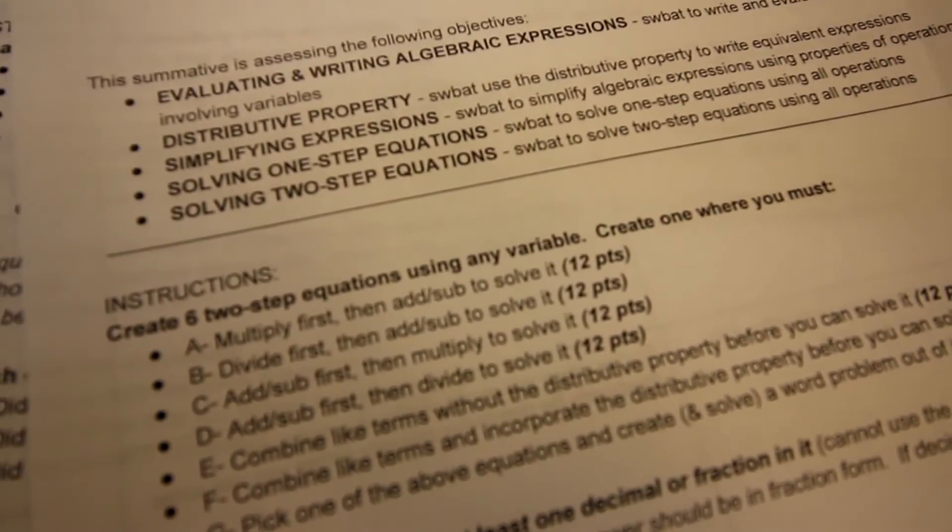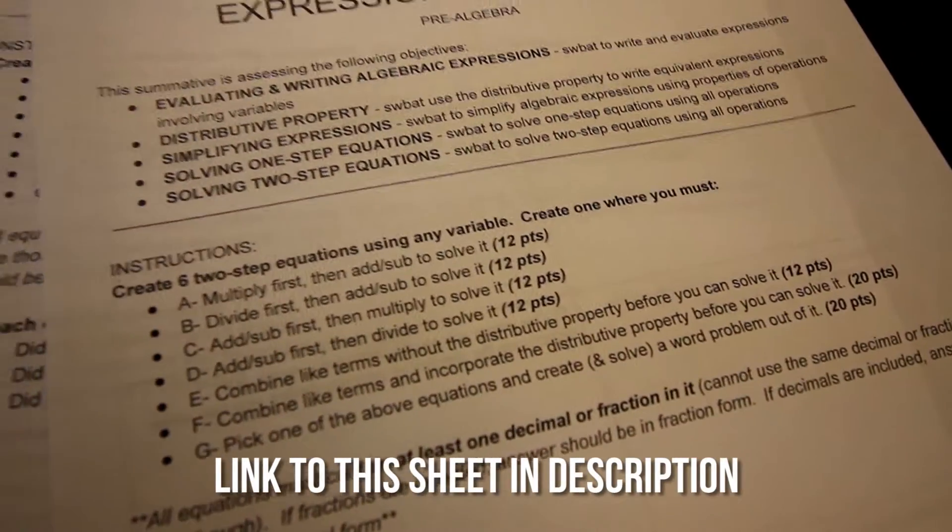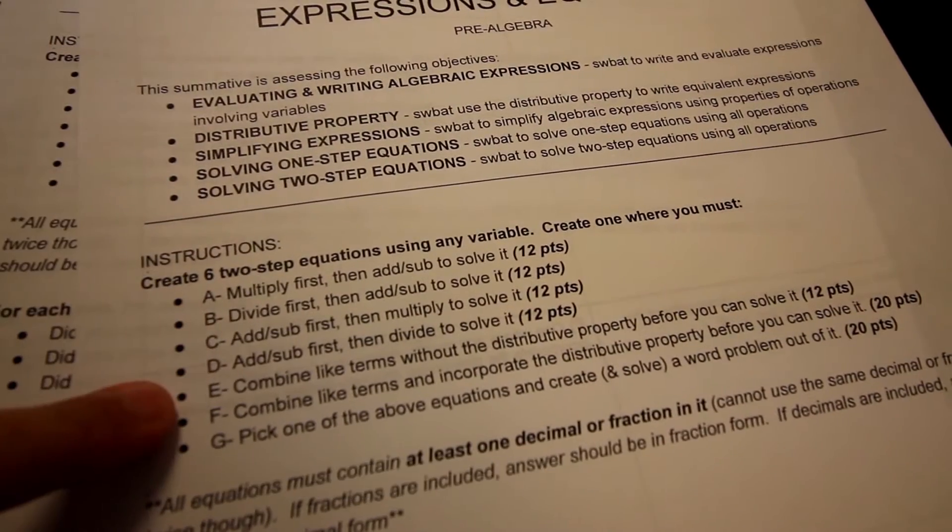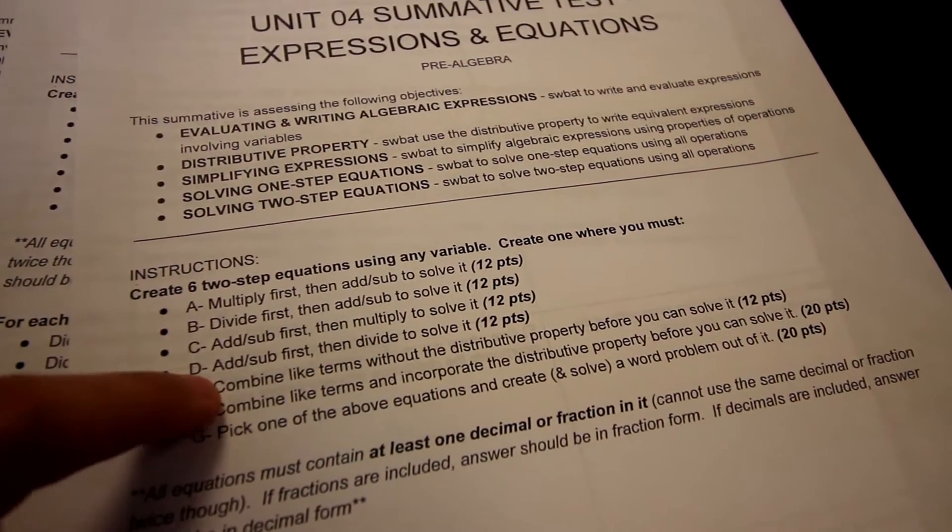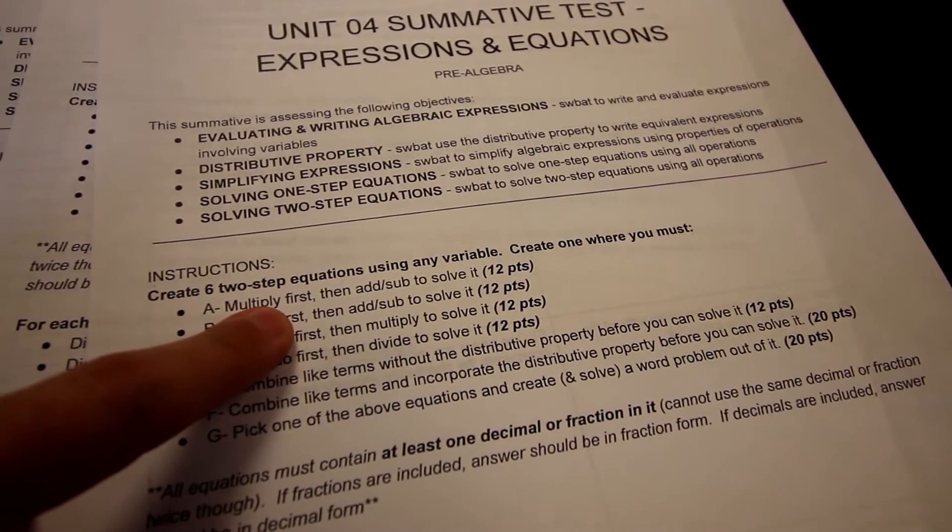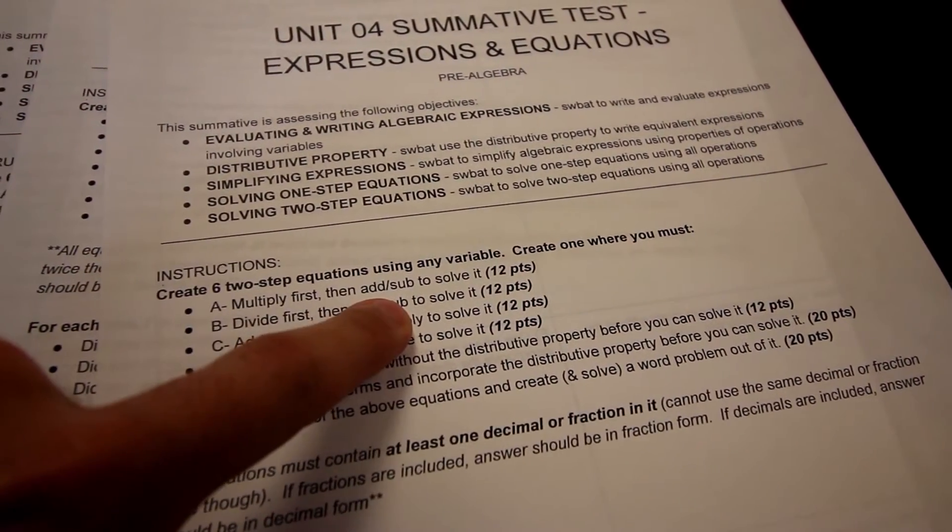So my students are working on a two-step equations project. It's not a traditional project test where they just give a bunch of two-step equations that they have to solve. But instead, they are asked to create their own two-step equations. And so I have six different equations here, and a couple of them they have to create where they have to combine like terms, where they have to multiply the variable first, and then add or subtract something to it.